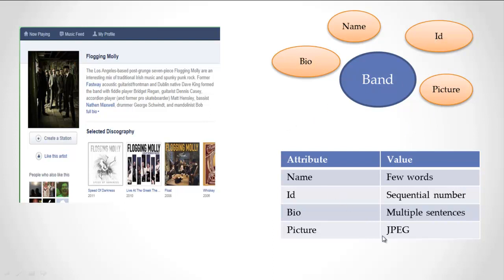Once again, I have user interface where I focus in and see what's specific to the band, not how the band is related to other things. I pull it out into a nice little diagram: a band is also a relatively simple thing — a picture, a bio, a name, and an ID. Looking at the attribute values: the name is a few words, the ID is a sequential number, the bio is multiple sentences, and I'll assume the picture is a JPEG. I'd really have to go talk to the Pandora people to nail it, but this shows how much you can figure out just by looking at the user interface. Notice what I don't include: the discography — those are recordings, and the recording is not specifically band information. We'll talk about how it's related in just a moment.